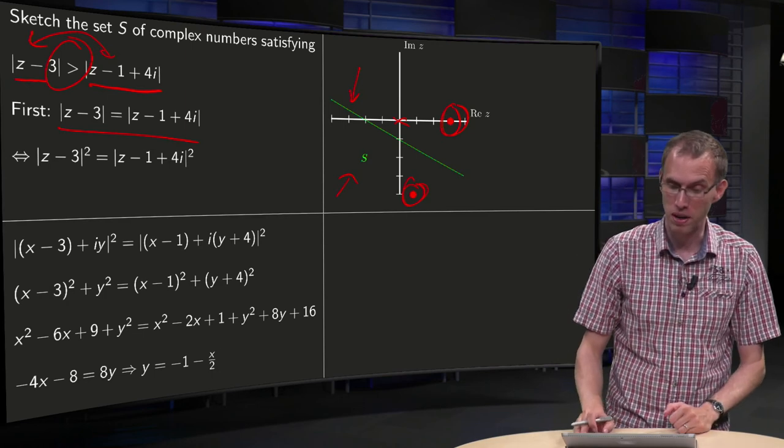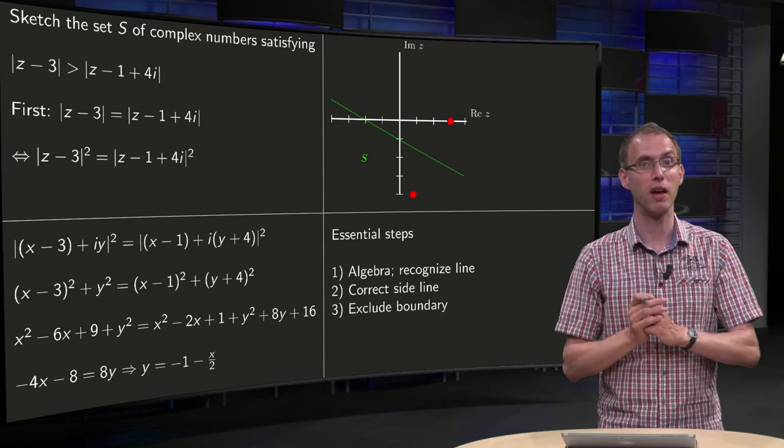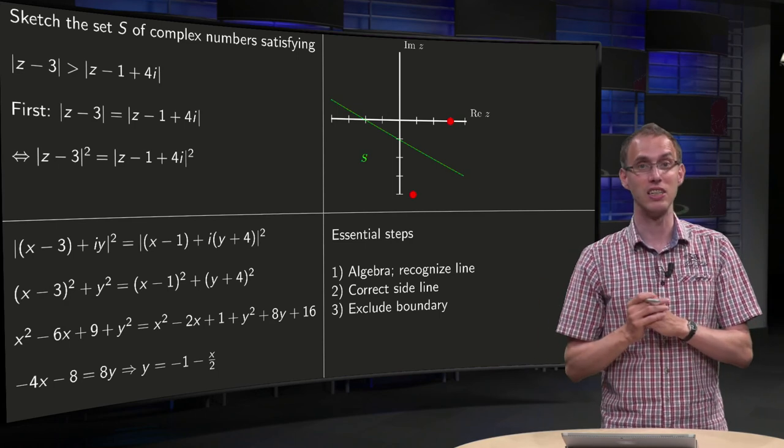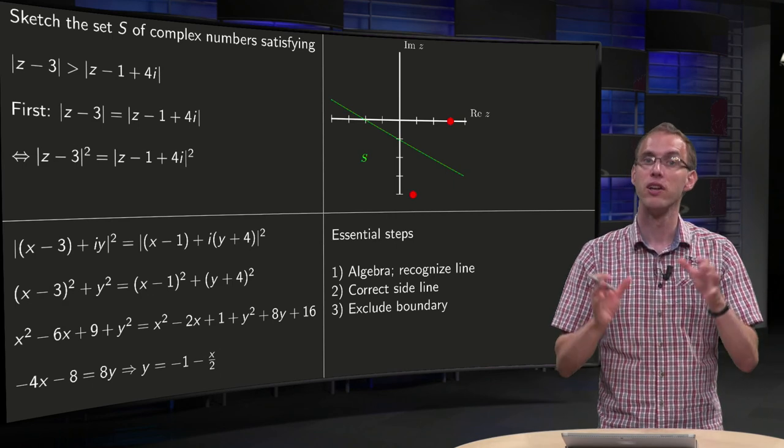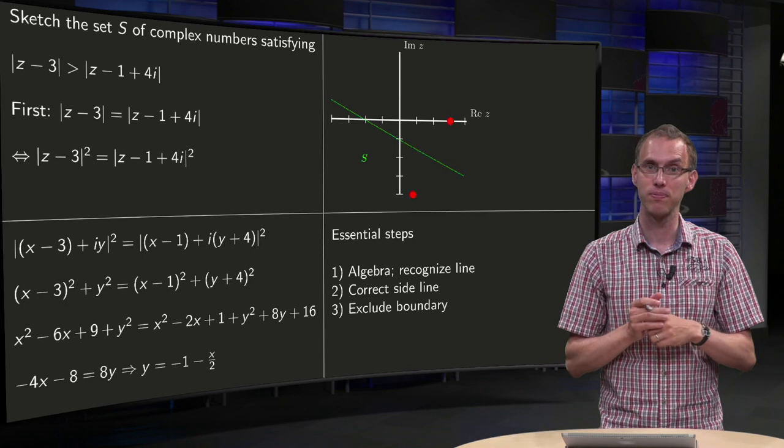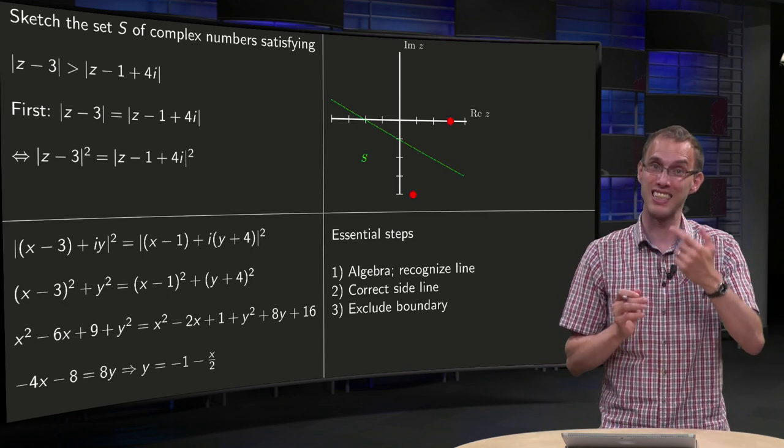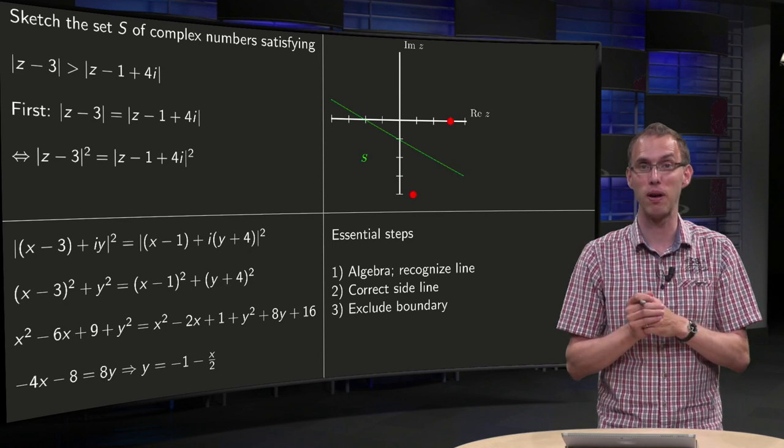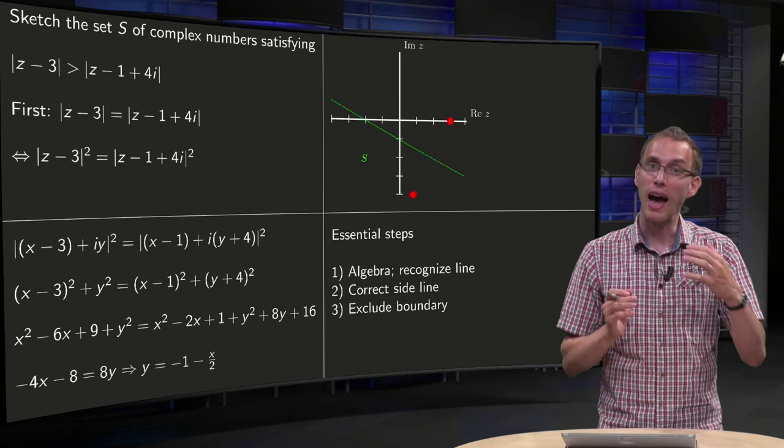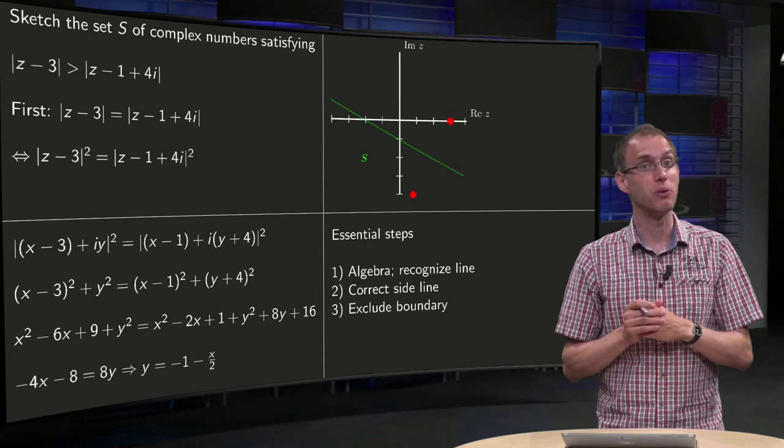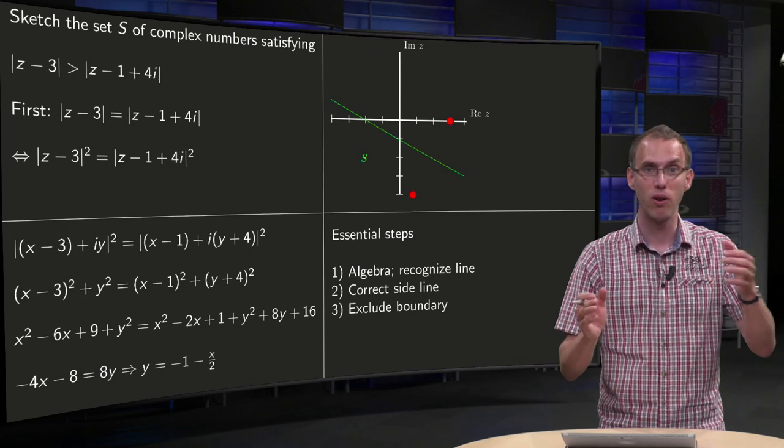Let's summarize the essential steps. First, you have to do some algebra and recognize that you get a line in this case. If you have some other equation you may have a circle or whatever. Second step, you have to be on the correct side of the boundary by plugging in some point. And third step, don't forget to check whether the boundary is part of your figure or not.